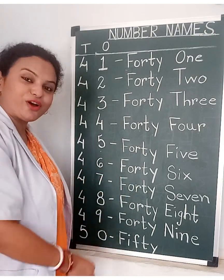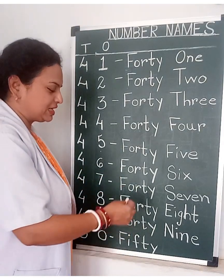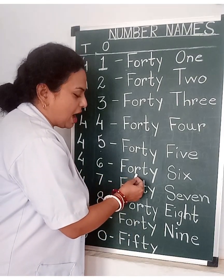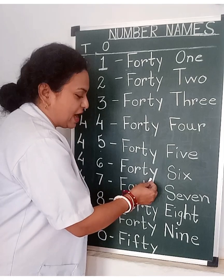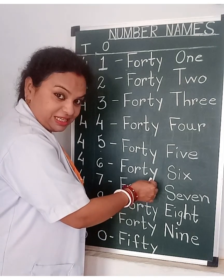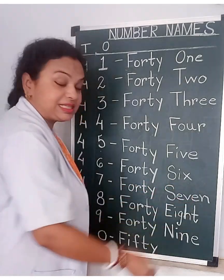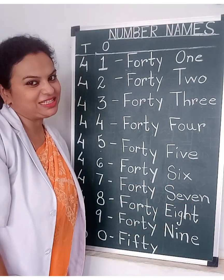4, 6 — 46. F, O, R, T, Y — FORTY. F, I, X — SIX. 46.